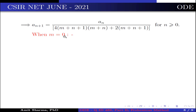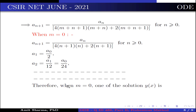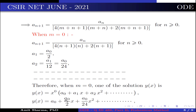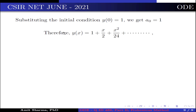Setting m = 0, the recurrence relation becomes aₙ₊₁ = aₙ / [4(n+1)(n+2)(n+1)] for n ≥ 0. Thus a₁ = a₀/2, a₂ = a₁/12 = a₀/24, and so on. For m = 0, one solution is y(x) = x⁰(a₀ + a₁x + a₂x² + …) = a₀ + (a₀/2)x + (a₀/24)x² + …. Applying the initial condition y(0) = 1 gives a₀ = 1, so y(x) = 1 + x/2 + x²/24 + ….